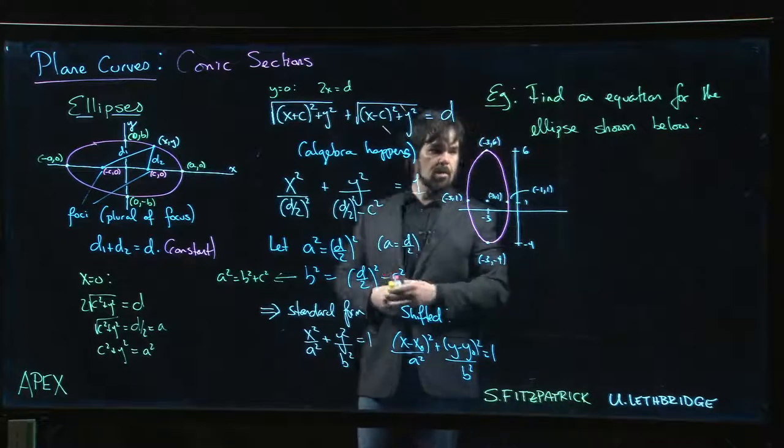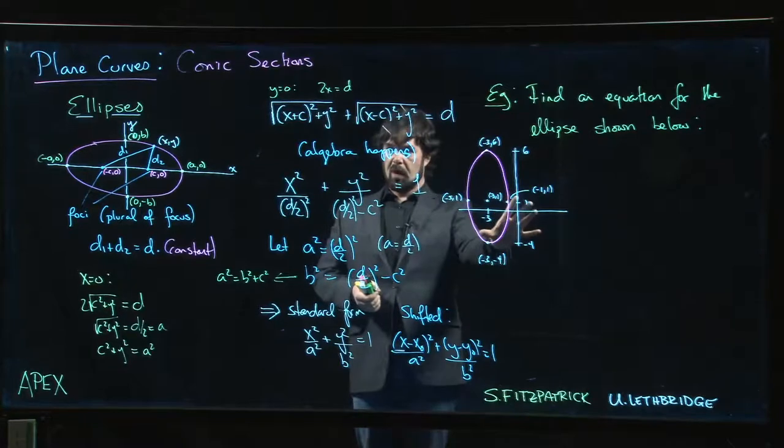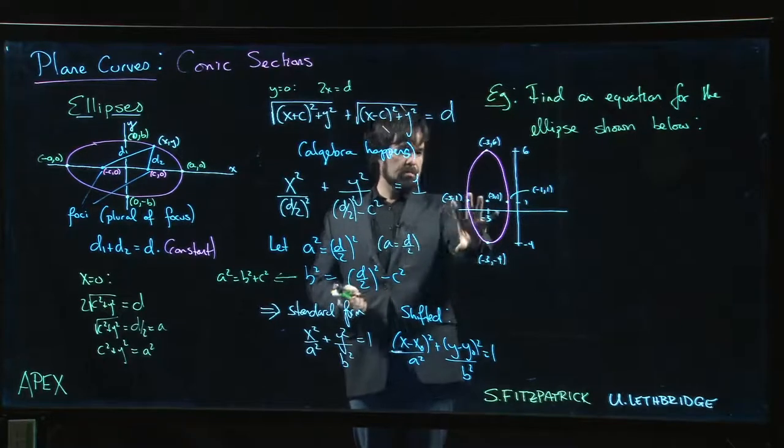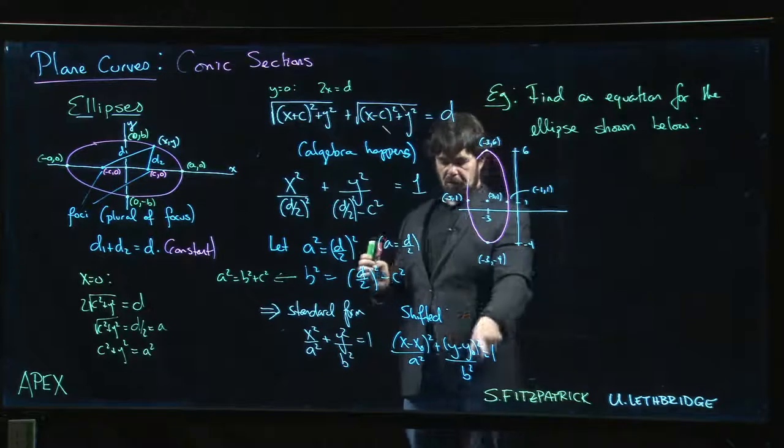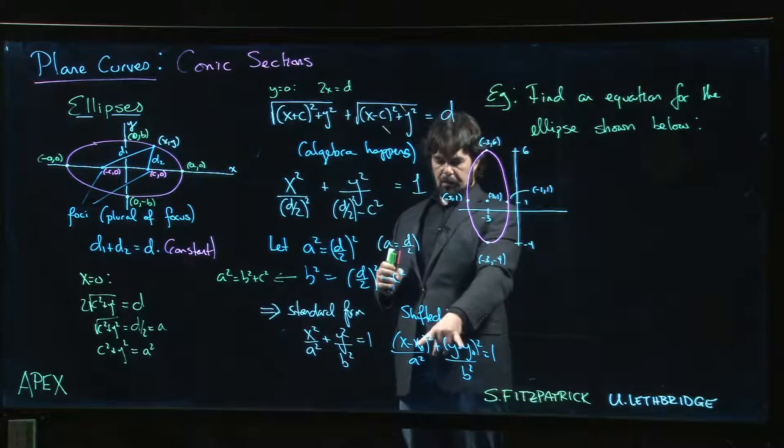Okay, so we'll start with a fairly basic problem. We've got the graph of an ellipse here in a coordinate system and we want to find the equation. So we're looking for this sort of shifted ellipse here.